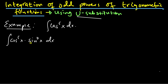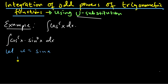We know that the derivative of sin is going to be cosine, and that's really nice here. So I will let u equal to sin x. That means du/dx is cosine of x. So let me substitute back here in the integral.